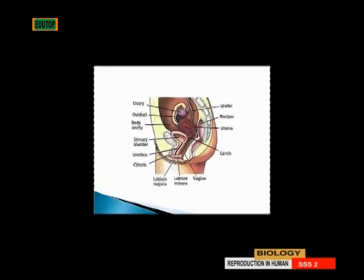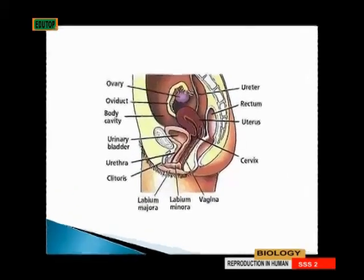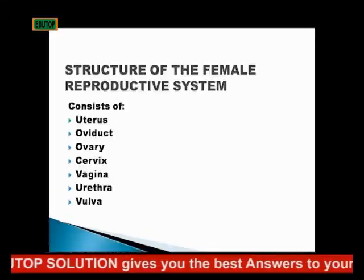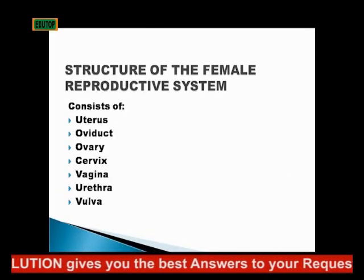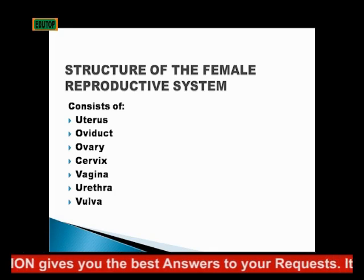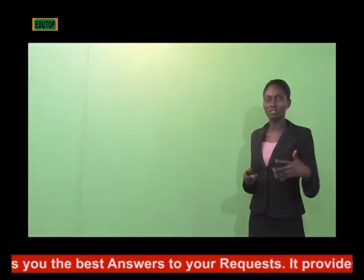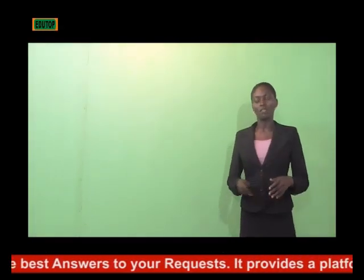Moving to the structure of the female reproductive system, it consists of the uterus, the oviduct, the ovary, the cervix, the vagina, the urethra, and the vulva. We'll be looking at the functions of these parts of the system.